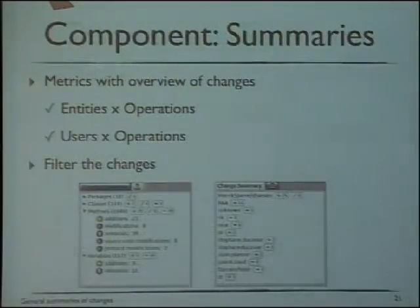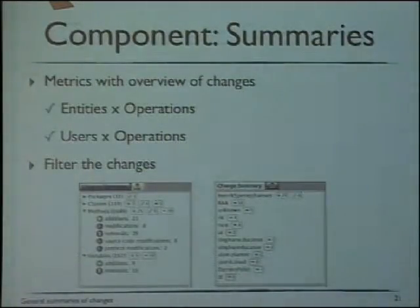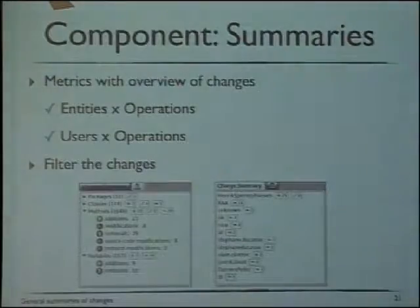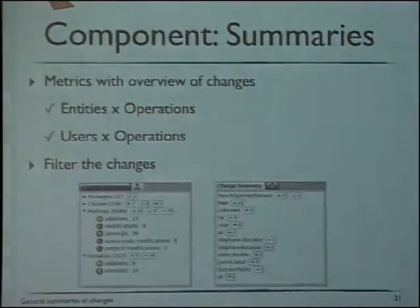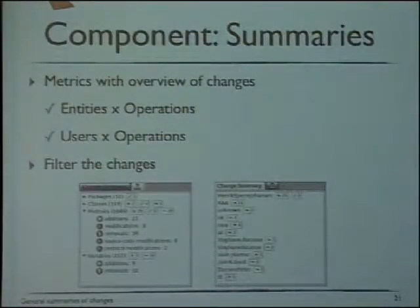Going to the summaries, it's pretty simple. We present a detail of the changes — the total number of changes, and with icons we show the ones that were added, modified, and removed for each entity. So you see, for example, from 32 packages, three were modified, and so on. We include a set of metrics to give a general idea of the changes, and the same for users — you'll see for each user what changes they made.